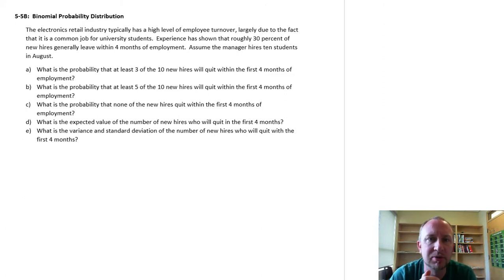So here we have a high level of employee turnover in the retail industry, largely due to the fact that it's a common university student job. So experience has shown that we have about a 30% turnover. We lose 30% of our new hires within 4 months. So assume the manager hires 10 students in August. Okay, so here that's our number of trials in the context of a binomial experiment. Here, n is equal to 10.